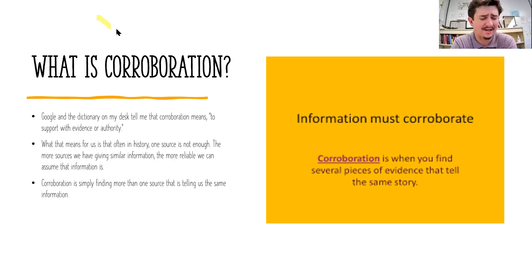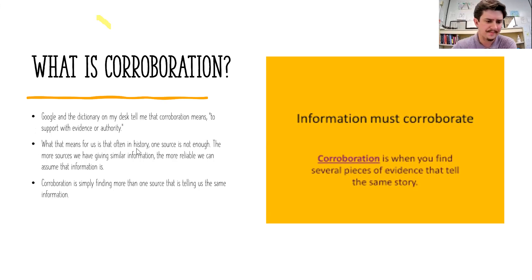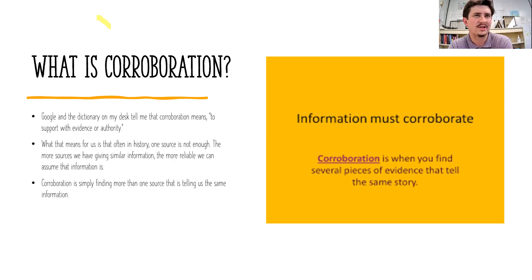Often times in history, one source isn't going to be enough. There's a whole host of reasons why one source may not give us everything we need to know. Another source might give us a different perspective — if it's a battle, we might want both sides' thoughts on it. If we only have one source, you're probably missing the other point of view. We usually want at least two or three sources confirming what is happening. The more sources we have giving similar information, the more reliable that information probably is. Corroboration is finding more than one source telling us the same thing — is there evidence from different sources telling us the same thing?